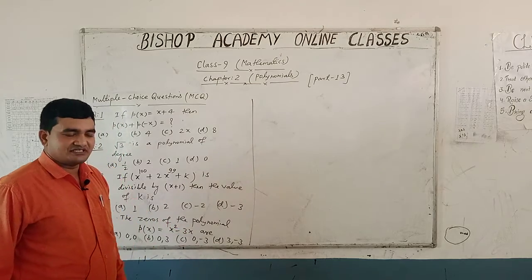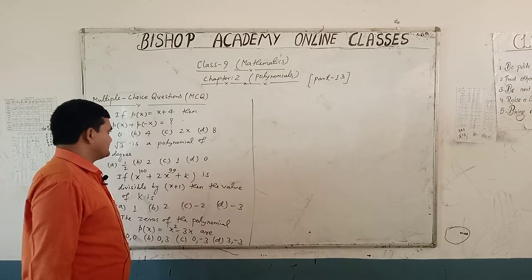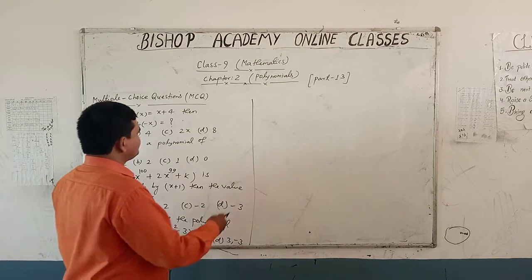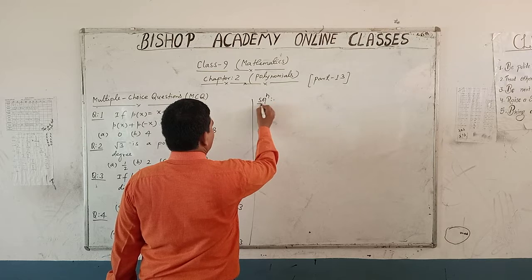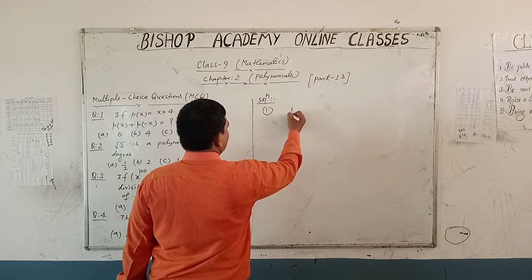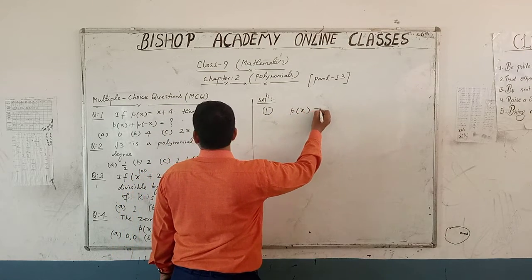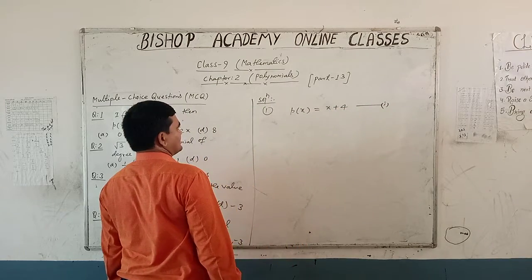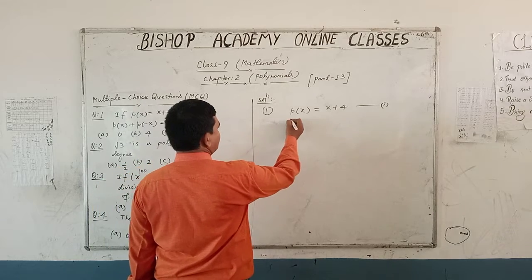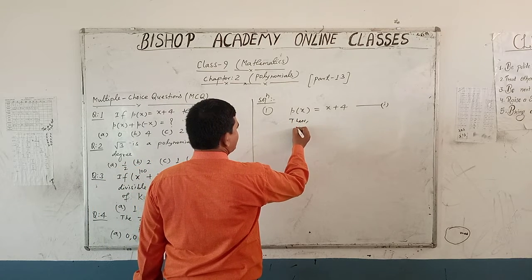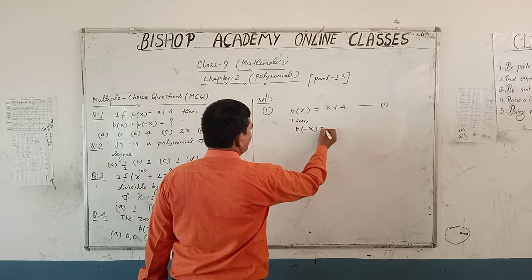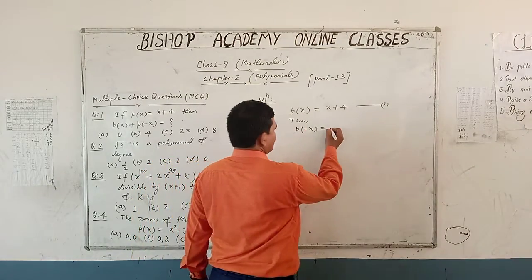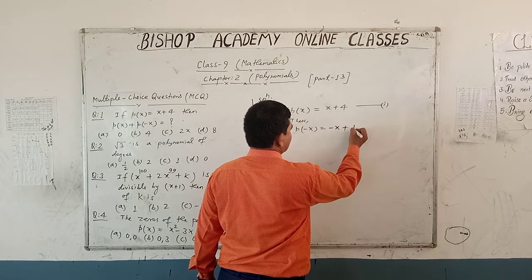Now we will solve question number 1. In question number 1, it is given that P(x) is equal to x plus 4 — let this be equation number 1. Then P(-x) is equal to: in place of x we write minus x, that means minus x plus 4.